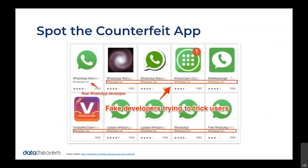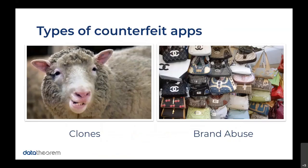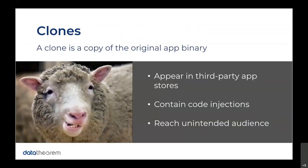I don't want to waste too much time because I want to get into the tool. Types of counterfeit apps — this is very interesting. There are clones: basic direct clones where they take that APK and might not add any code to it, but they may add a permission to get some data from your phone or device. There's also brand abuse where they're literally taking your brand and your name and putting that on the application to make it look like yours. A clone is a copy of the original app binary. It appears in third-party app stores, could contain code injections, and it reaches unintended audiences. Financial apps have made their way onto third-party application stores.